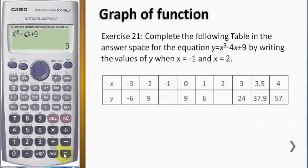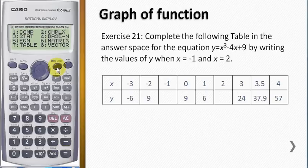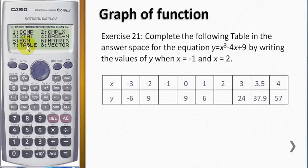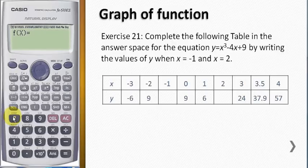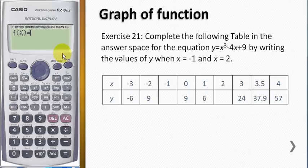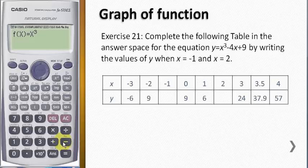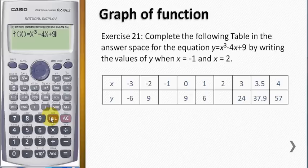This is the way for us to solve this problem using CALC button. You can also use the table function in calculator. You press number 7 to select the table and then the calculator will ask you what is the function of x. Then you have to key in alpha x cubed minus 4 alpha x plus 9. And then you press equal, they will ask you start from where.